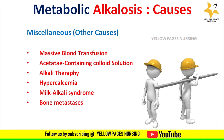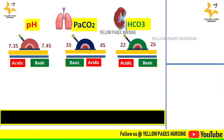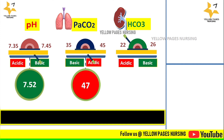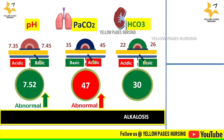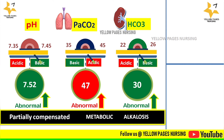In this example of partially compensated metabolic alkalosis, the pH is 7.52, PaCO2 is 47, and bicarbonate is 30. The pH is abnormal (above 7.45), and bicarbonate is above the normal range, both indicating basic — which confirms metabolic alkalosis. Because the pH is still abnormal, this is called a partially compensated metabolic alkalosis.